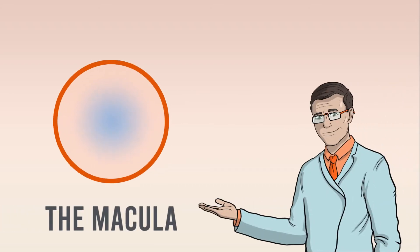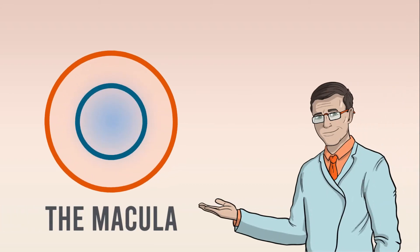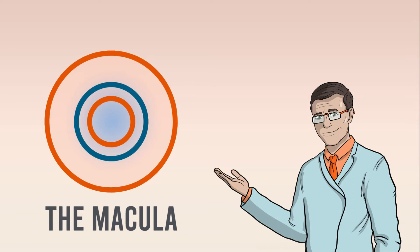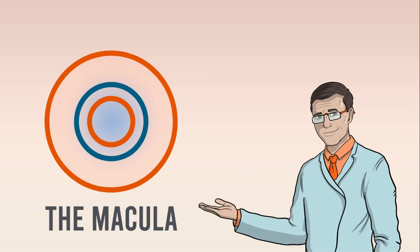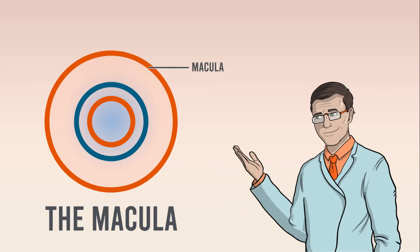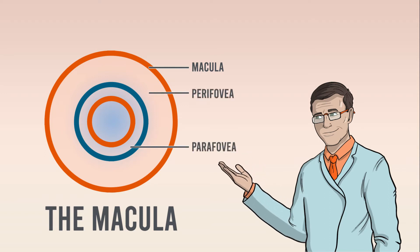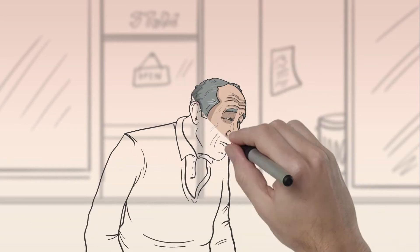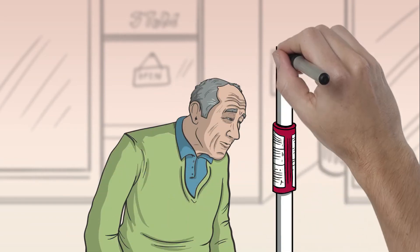Age-related macular degeneration, or AMD, is a degenerative disease that affects the macular region of the retina, causing progressive, irreversible loss of vision. The macula is a small area at the center of the retina responsible for detailed central vision. The macula contains the perifoveal and parafoveal regions, as well as the fovea, which is important for the most highly detailed vision. Early AMD is typically asymptomatic, and vision loss progresses from mild to severe as AMD-related changes to the eye develop.